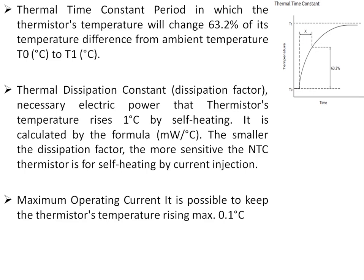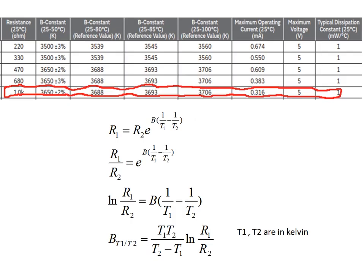The thermal dissipation constant (dissipation factor) is the electrical power required to raise the thermistor temperature by one degree due to self-heating. The smaller the dissipation factor, the more sensitive the NTC thermistor is to self-heating, so the dissipation constant should be as high as possible to minimize self-heating error. Maximum operating current is the current that keeps the thermistor temperature rise to a maximum of 0.1°C.